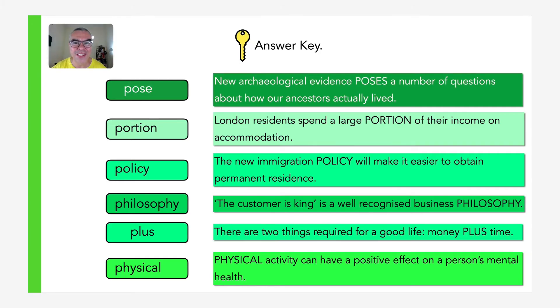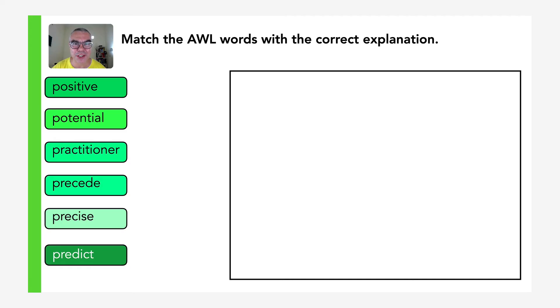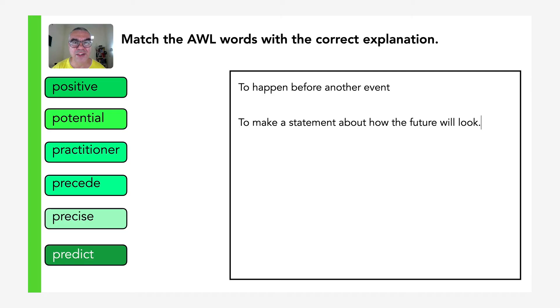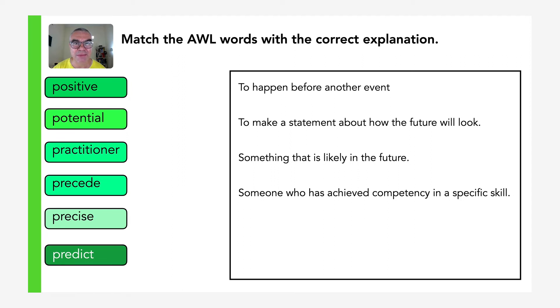We have three more groups of words in set three to cover. Here is the next group: positive, potential, practitioner, proceed, precise, predict. To practice these words, match the explanation. The explanations are: to happen before another event; to make a statement about how the future will look; something that is likely in the future; someone who has achieved a competency in a specific skill; something that is good or encouraging; giving very accurate information.